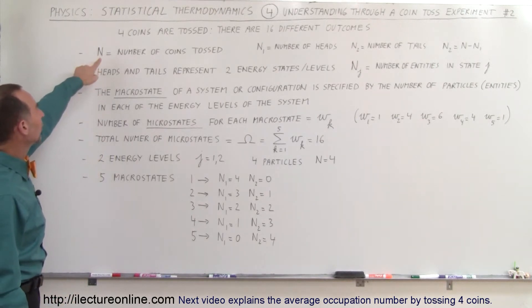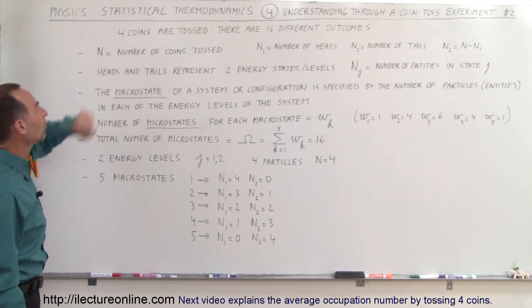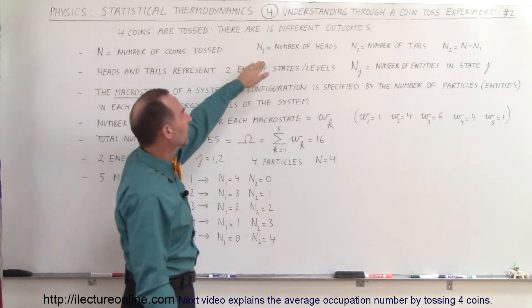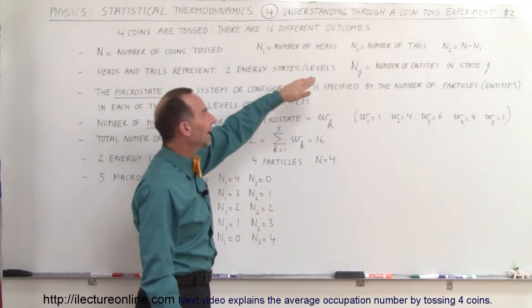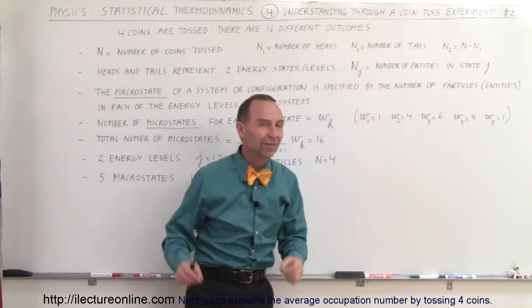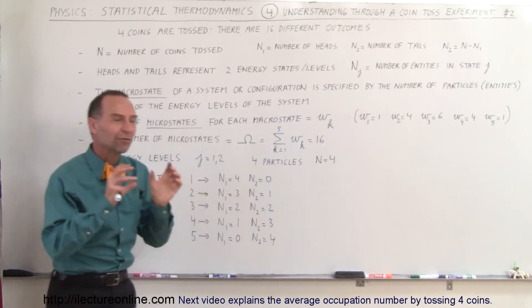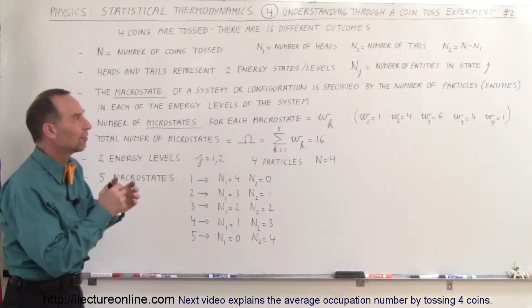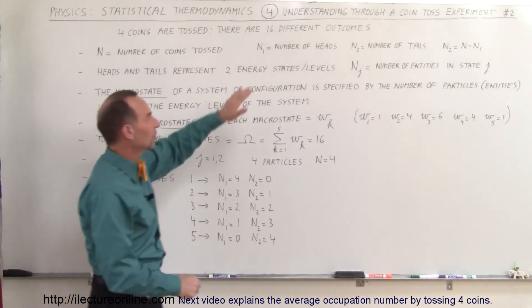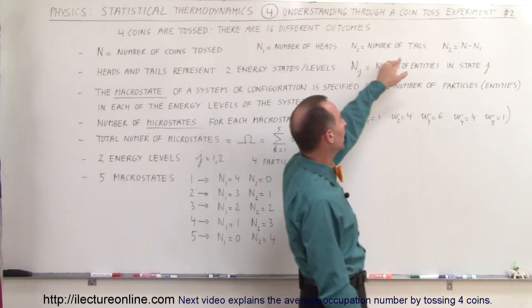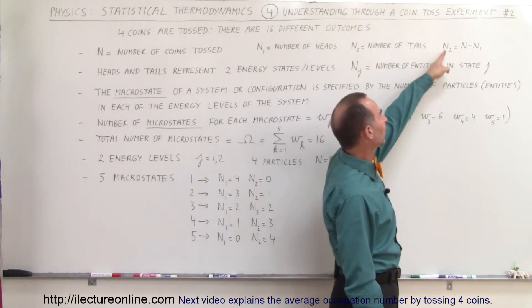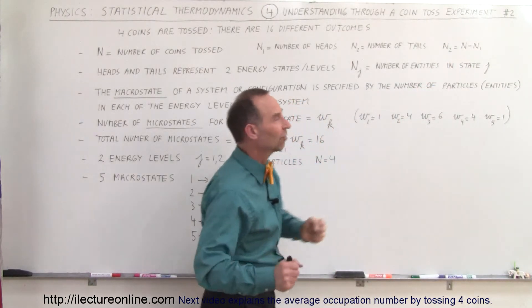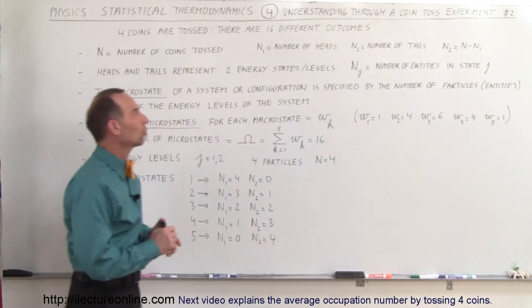n represents the number of coins tossed, so in this case n equals 4. n sub 1 is the number of heads and n sub 2 is the number of tails. n sub 1 and n sub 2 define the macro states. The number of tails equals the total number of coins minus the number of heads.